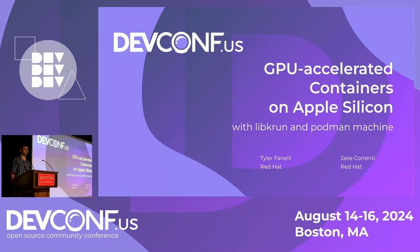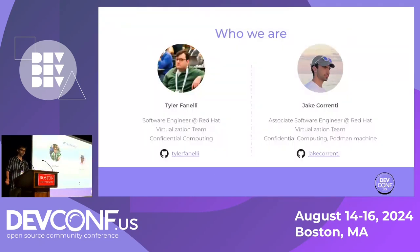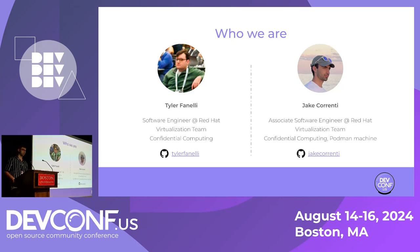Hi everyone, thanks for coming out today. I know we're holding you back from your weekend, but I think we have something pretty cool to show you. We'll be talking about GPU accelerated containers on Apple Silicon with libkrun and Podman machine. My name is Jake Carrente, I'm an associate software engineer at Red Hat on the virtualization team. I work primarily on confidential computing but I also dabble in Podman machine. Here with me is Tyler Finnelli, a software engineer also at Red Hat who works on confidential computing on the virtualization team.